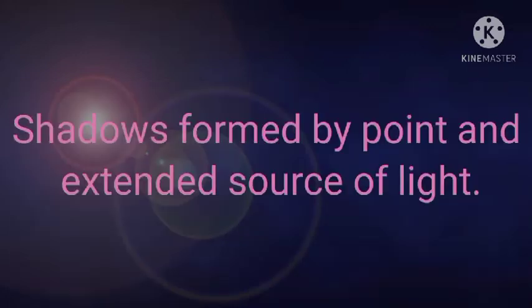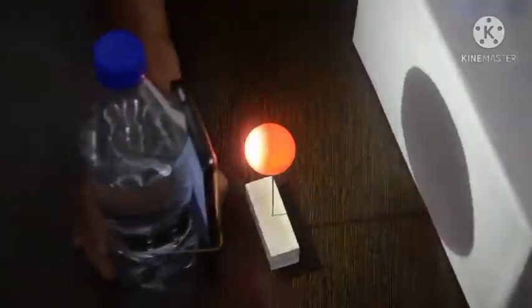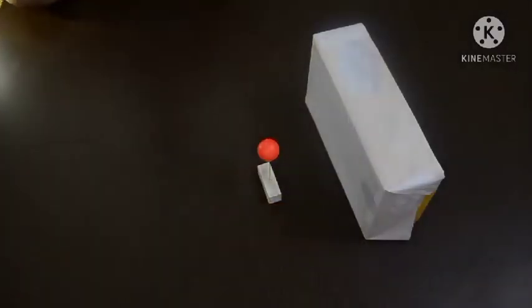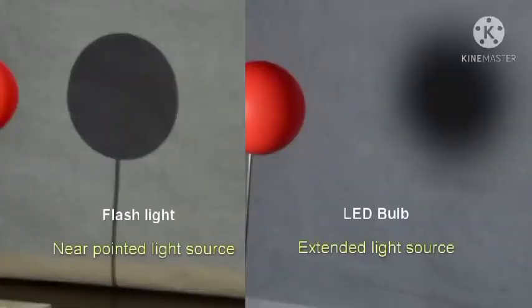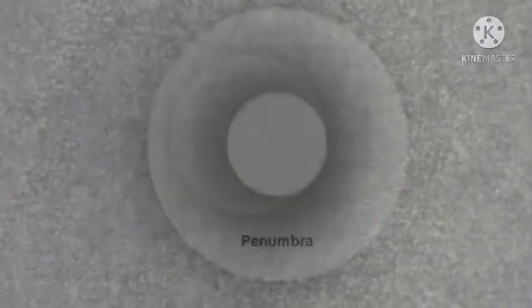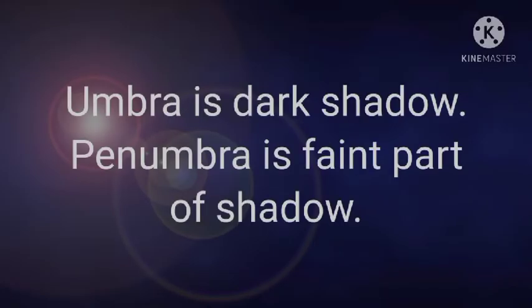Now let's see about the shadows formed by point sources and extended sources. For a point source, we can take a mobile torch. When we put an object between the source of light and the screen, the shadow we get is very sharp and dark — that is called the umbra. If we replace the point source with an extended source, the shadow at the middle is dark, called the umbra, and the faint outer part is known as the penumbra.